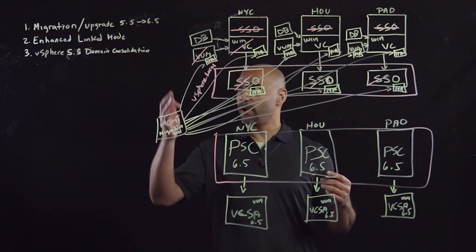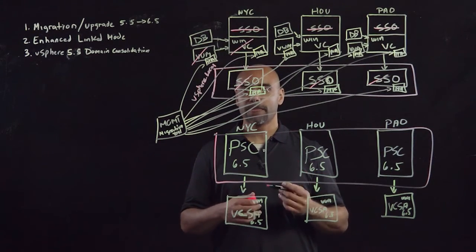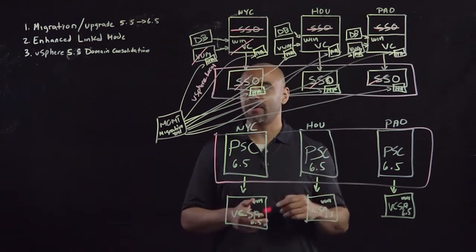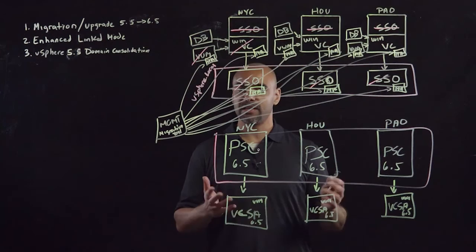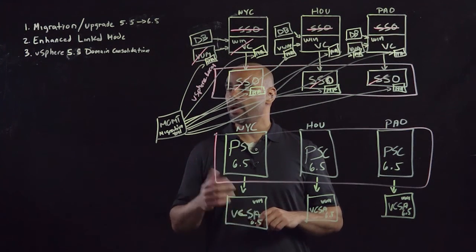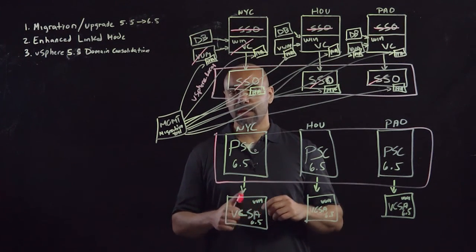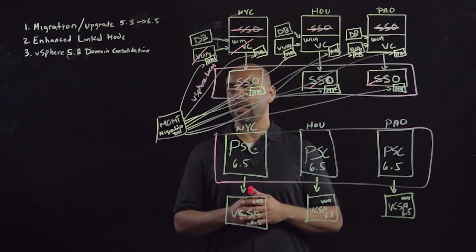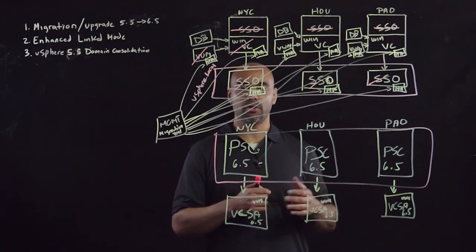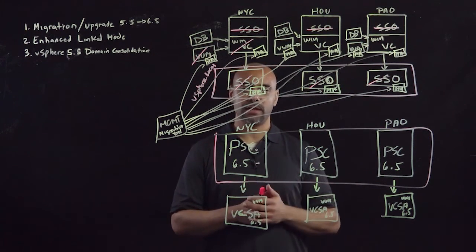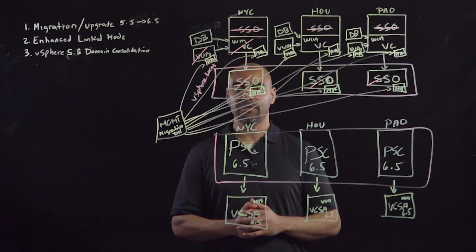We were able to migrate slash upgrade from a vSphere 5.5 environment to a 6.5 environment. We were also able to get to enhanced link mode so we can manage any of our VCs from any one of our web clients, as well as consolidate our vSphere 5.5 SSO domain. One thing I want to make sure of note, especially with consolidation, is if you upgrade that first node from 5.5 to 6.0 before consolidating, then you cannot consolidate. So keep that in mind during your upgrade slash migration planning. That concludes this video. Thanks for watching.